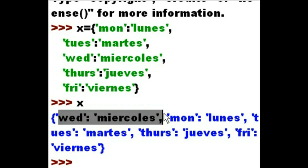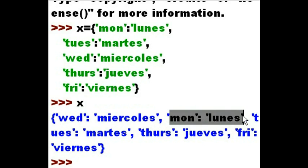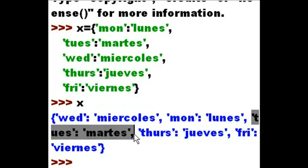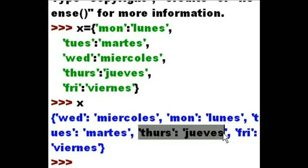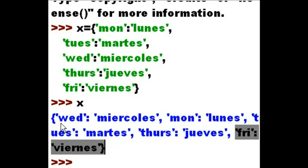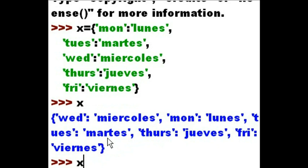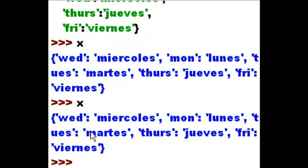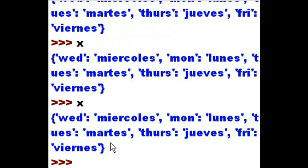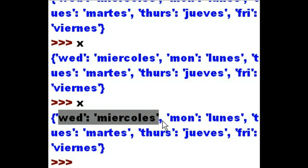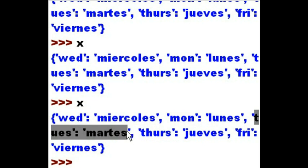Monday: Lunes. Wait a minute — it doesn't say that at all. Here's Monday: Lunes. Here's Tuesday: Martes. Here's Thursday: Jueves. And here's Friday: Viernes. At the front is Wednesday: Miércoles. How did that happen? It must be a mistake. Let's do it again — X. And no, it's not a mistake at all. If I do it again and again, you'll see that it's out of order. And that's a dictionary — it'll print in pretty much a random order.